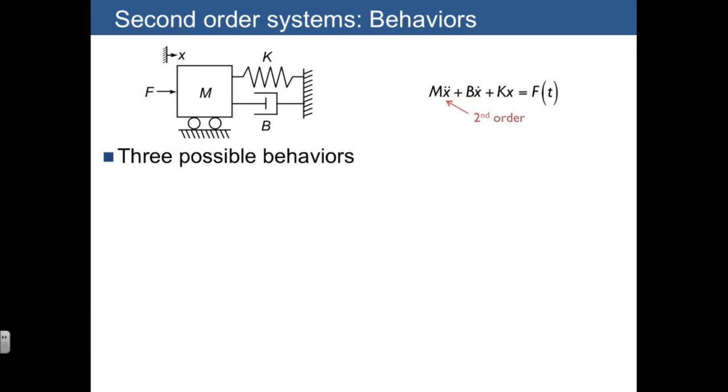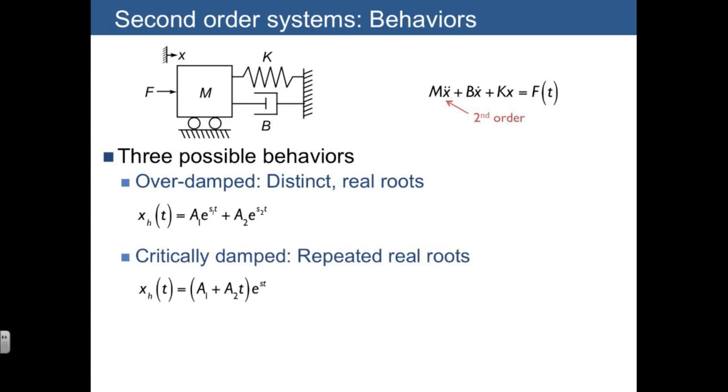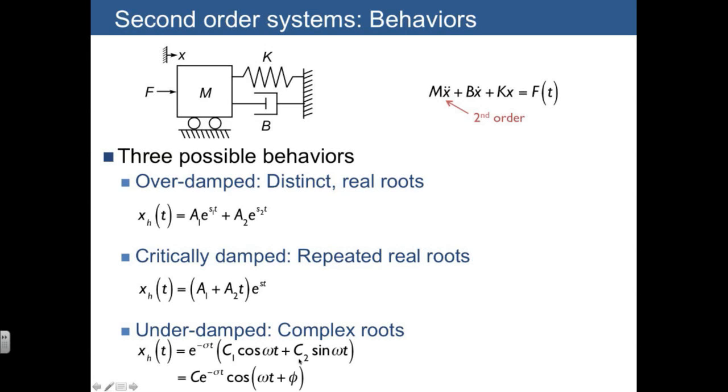This is a summary of the possible behaviors for second-order systems. One case is overdamped with distinct real roots. The other is critically damped with repeated roots, and then the last is underdamped with complex roots. We said that you can write the homogeneous solution as an exponential multiplied by sine plus a cosine, or you can write it as having a single sine with an unknown phase. There are just two ways that are equivalent to write the same thing.